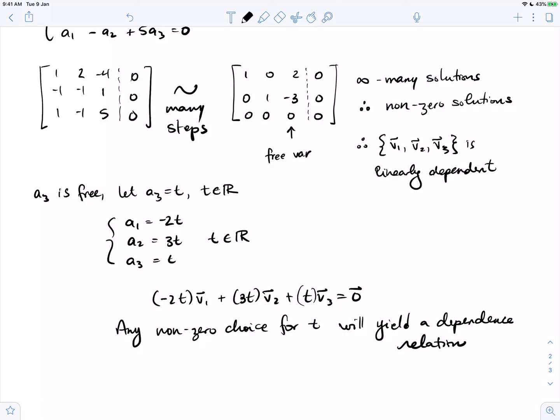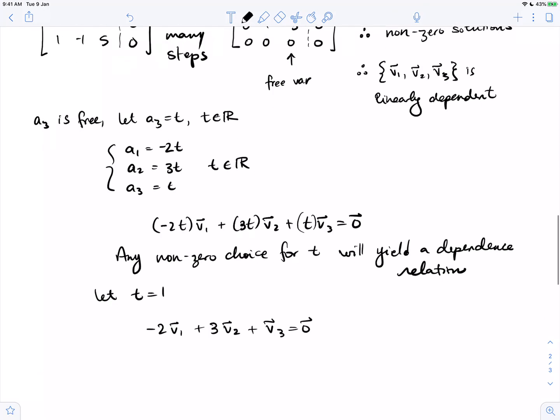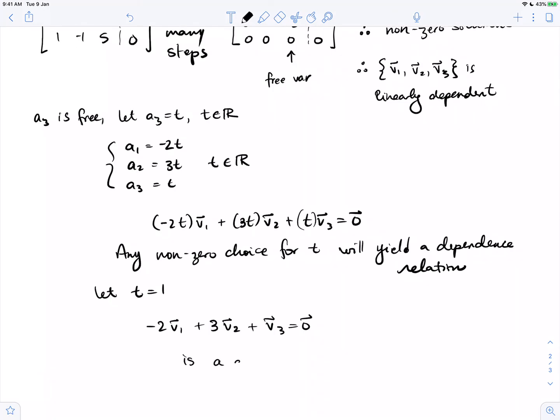So we're choosing a particular solution to the homogeneous system. t equals 1 is as good a choice as any, so minus 2v1 plus 3v2 plus v3 equals 0 is a dependence relation.